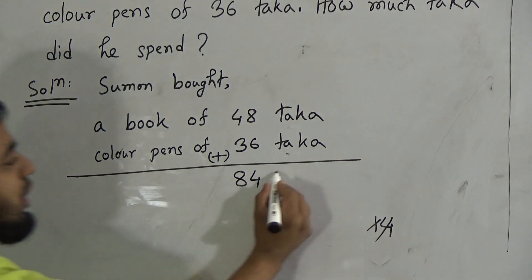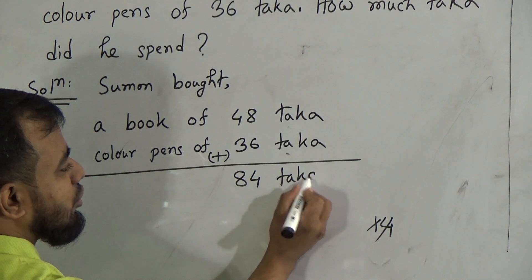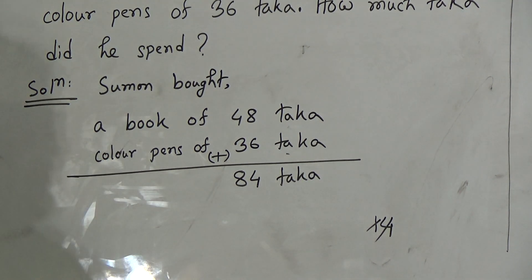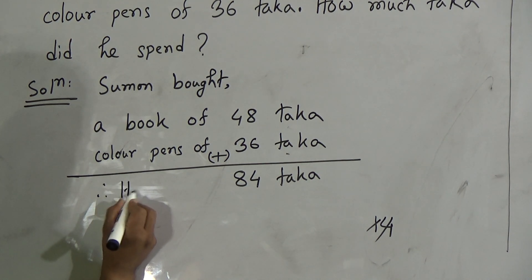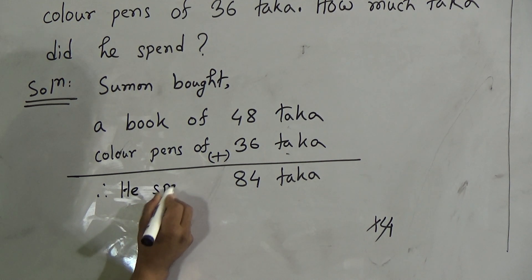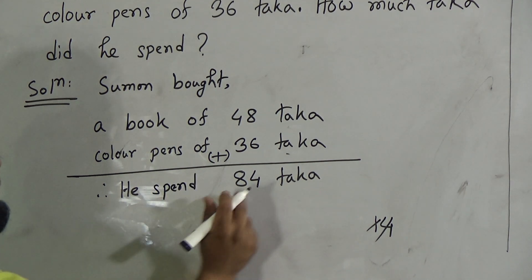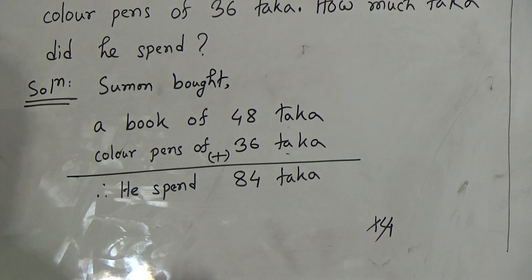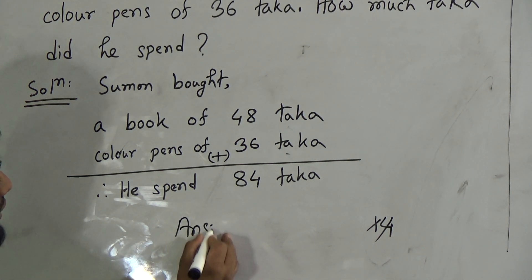So, 84 taka is the total cost of these two things. So, total spend, he spends, you can write down there for Shuman or he, he spent 48 taka. The answer will be 48 taka.